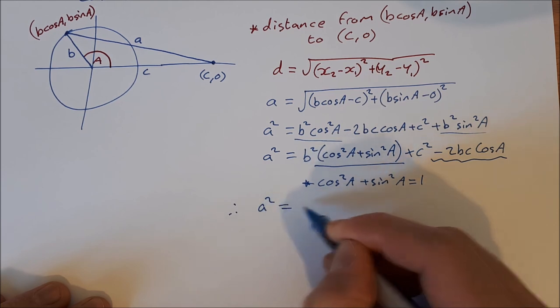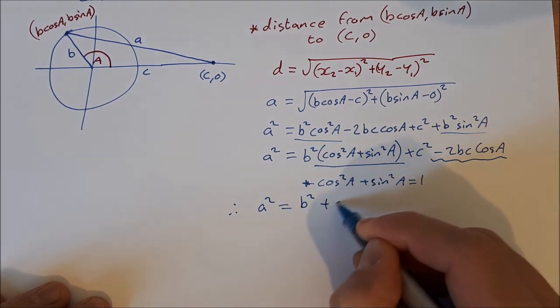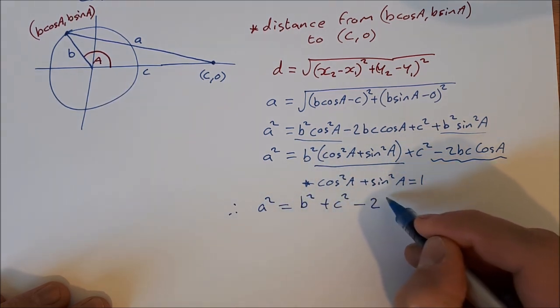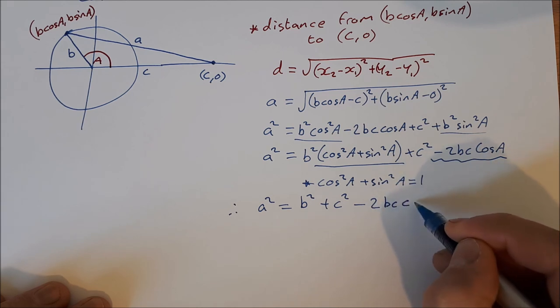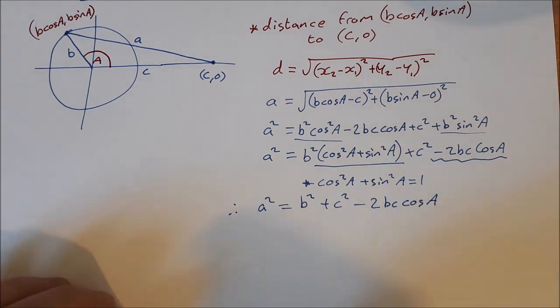So now we have, therefore, a squared is equal to b squared plus c squared minus 2bc cos A, which is what we're looking for, which is the cosine rule.